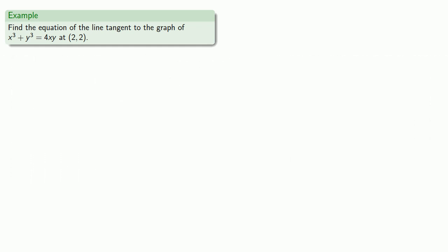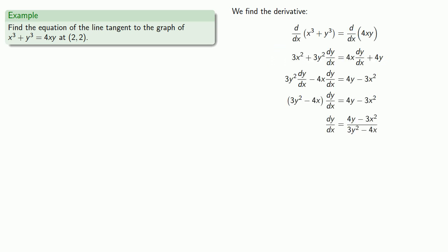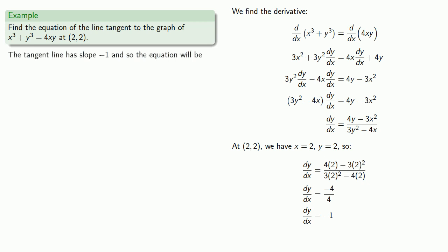We'll use our own method to find the tangent line. To write the equation of the tangent line, we need to know the slope and a point on the curve. We can find the slope by finding the derivative, so we'll find the derivative. At the point (2, 2), we have x equals 2, y equals 2, so we'll substitute in those values. And so the tangent line has slope negative 1 and it passes through the point (2, 2), so the equation will be...